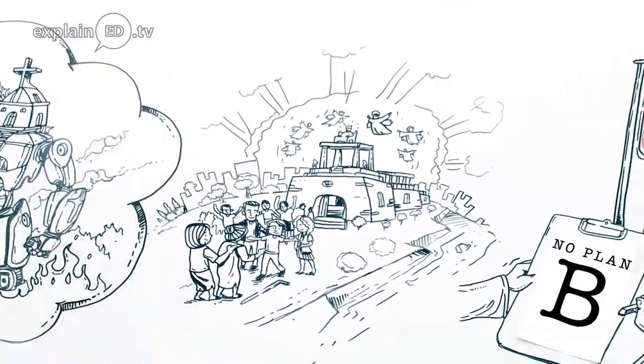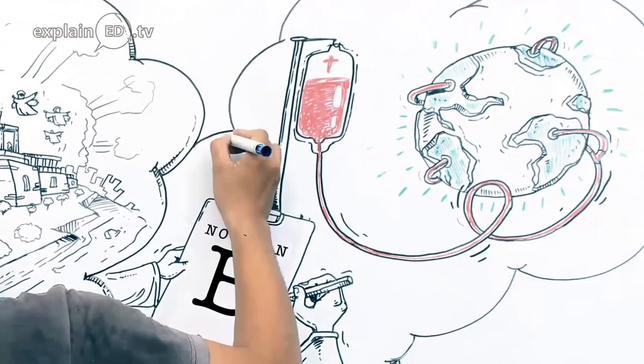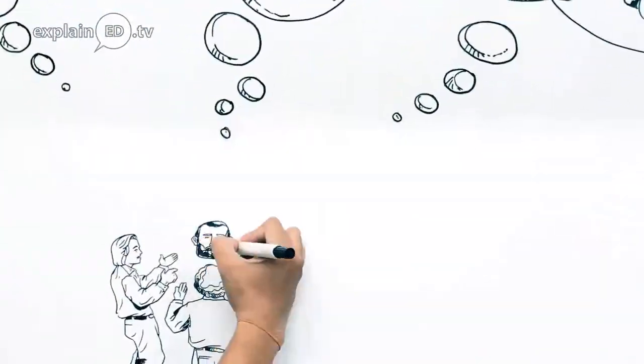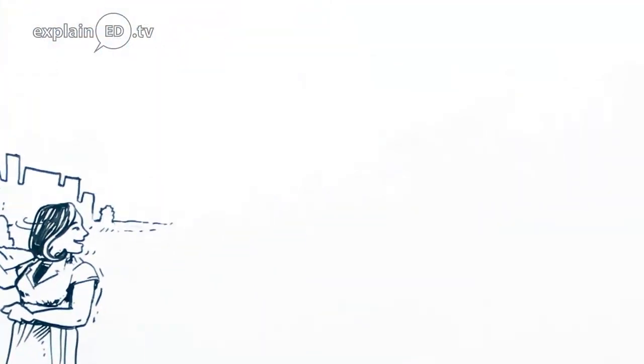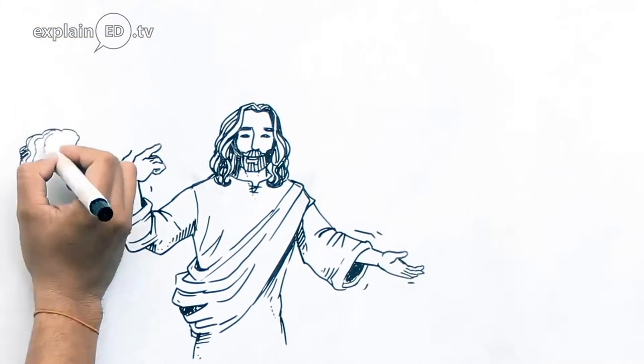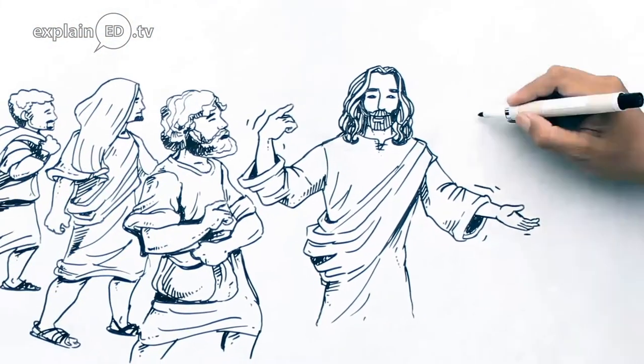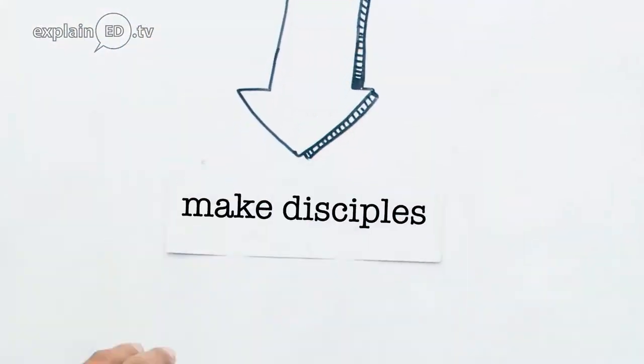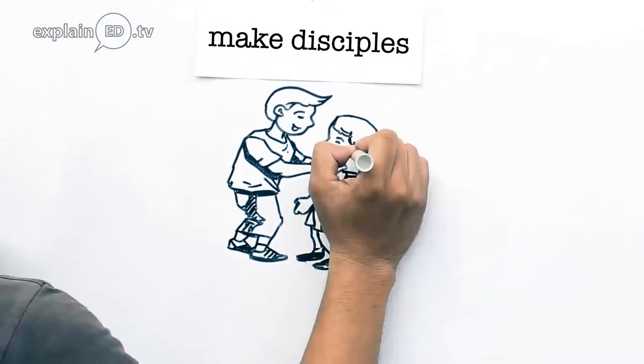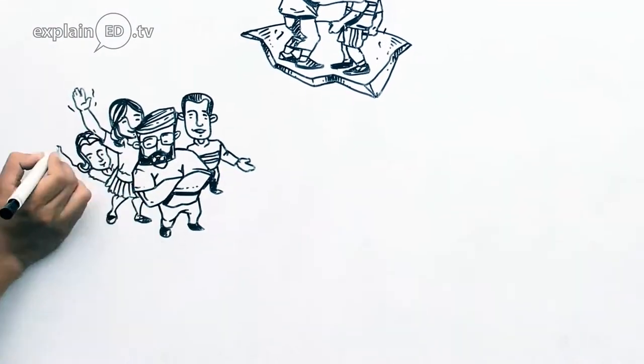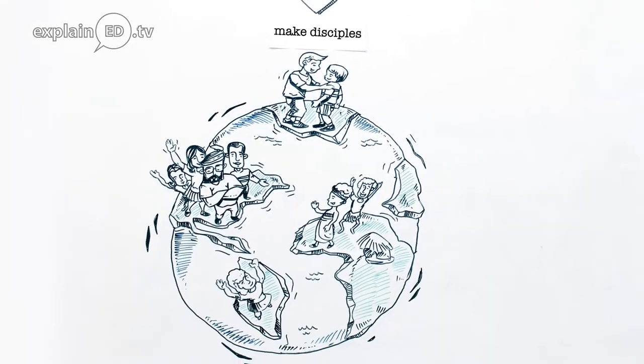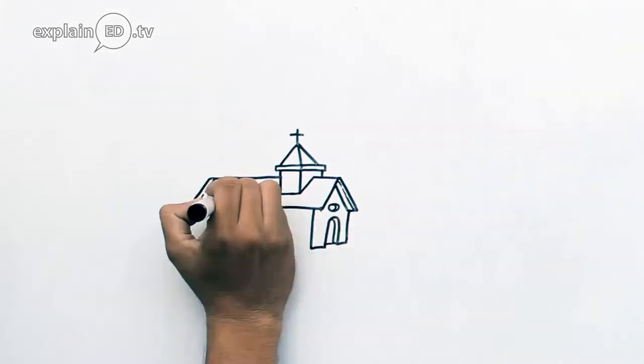Many churches today struggle to relate to the first century church, the ecclesia established by Jesus Christ. Similarly, many Christians struggle to relate to Christ's original command to make disciples. Yet this command to make disciples is the core mission of the church, the single strategy given by Christ to bring the kingdom of God to our broken world.